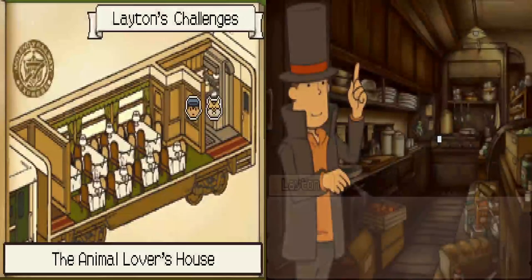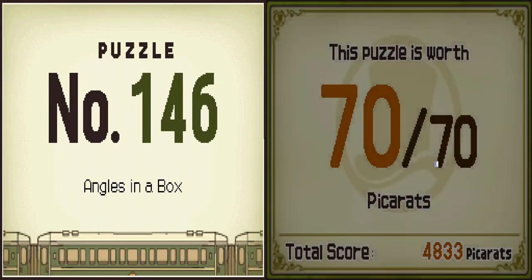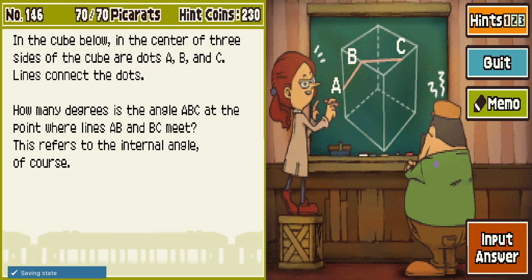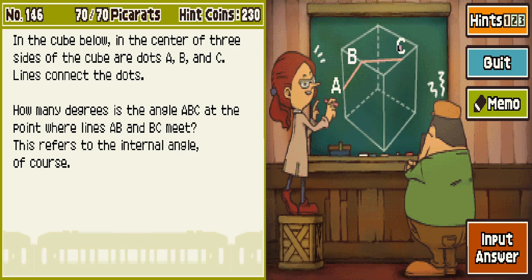Angles in a Box. In the cube below, in the center of three sides of the cube are dots A, B, and C. Lines connect the dots. How many degrees is the angle ABC at the point where lines AB and BC meet? This refers to the internal angle.